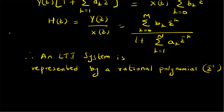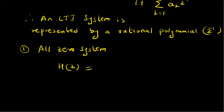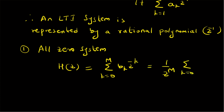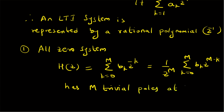Consider two special cases. In case 1, we have an all-zero system where H(z) equals only the numerator: H(z) = summation k=0 to M of b_k · z^(-k). This can be rewritten as (1/z^M) multiplied by summation k=0 to M of b_k · z^(M-k). This is a polynomial in positive powers of z, whose roots are the zeros of H(z). The z^M factor corresponds to M trivial poles at z=0, and the system also has M non-trivial zeros.